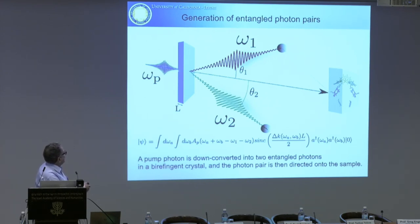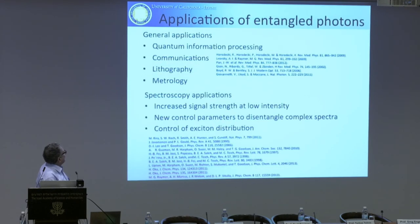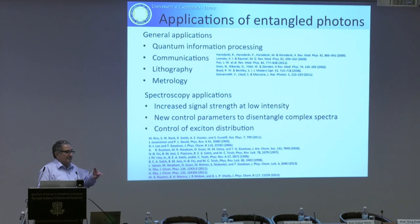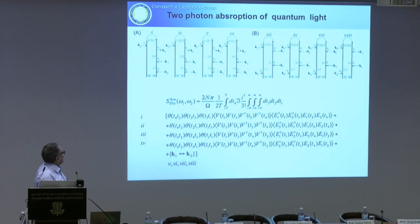One of the most common and important sources of quantum light is entangled photons. You have a nonlinear crystal, you bring a pump, and it breaks into two fields, ω₁ and ω₂ — twin photons created together, with ω₁ + ω₂ = ωₚ. The wave function is a superposition of these two frequencies. Entangled photons are used in communication, metrology, and quantum information processing, where the goal is to keep matter as simple as possible. In spectroscopy, we have the opposite goal: we want to interact with a complicated molecule and see what happens.